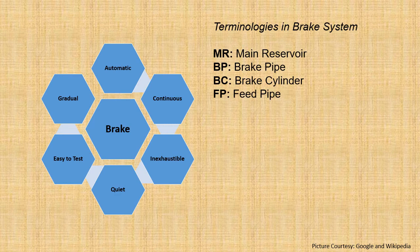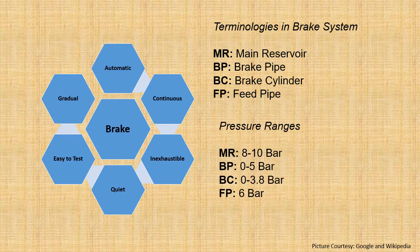Now let's cover the terminologies of the brake system. The main reservoir is known as MR, and the brake pipe is known as BP — the heart line of the brake system. Dropping or charging the brake pipe leads to application and release of the brake, and enables the wagons or coaches to store their own brake power. The brake cylinder is known as BC, and the feed pipe is FP, typically used in India for charging the auxiliary reservoir. Pressure ranges: MR is 8 to 10 bar, BP is 0 to 5 bar, the brake cylinder is typically 0 to 3.8 bar depending on vehicle type, and the feed pipe has a constant value of 6 bar.